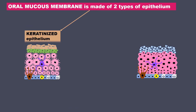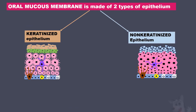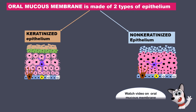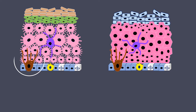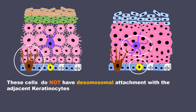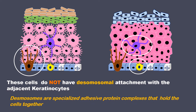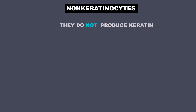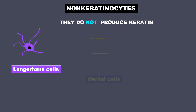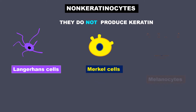Oral mucous membrane is made of two types of epithelium: keratinized and non-keratinized. You can watch my video on oral mucous membrane for more info. In both these epithelium you can see certain cells which look totally different, and these cells do not have desmosomal attachment with adjacent keratinocytes. Desmosomes are specialized adhesive protein complexes that hold the cells together. These cells are the non-keratinocytes since they do not produce keratin, and they are Langerhans cells, Merkel cells and melanocytes.